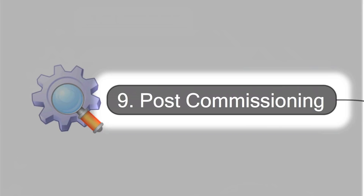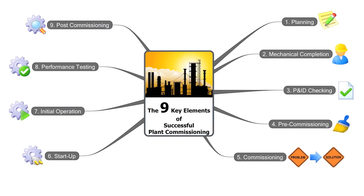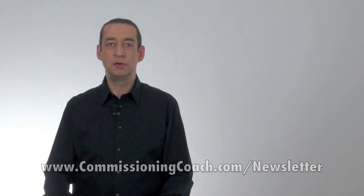I want to remind you that you can download this mind map in HD quality from my download section on www.commissioningcoach.com. To summarize the first lesson: we learned to name the 9 key elements of successful plant commissioning and we learned the right order. In lesson number 2 I will speak about the first key element, planning, in more detail. Please sign up for my commissioningcoach.com newsletter and I will keep you up to date about new training lessons. Thank you for watching and see you soon.